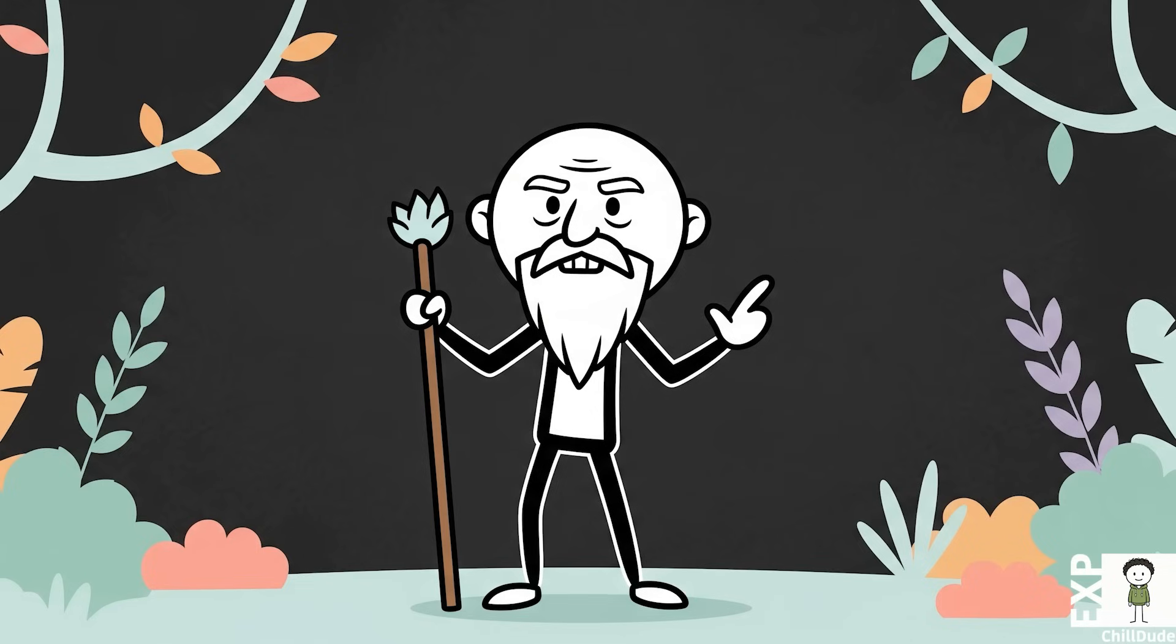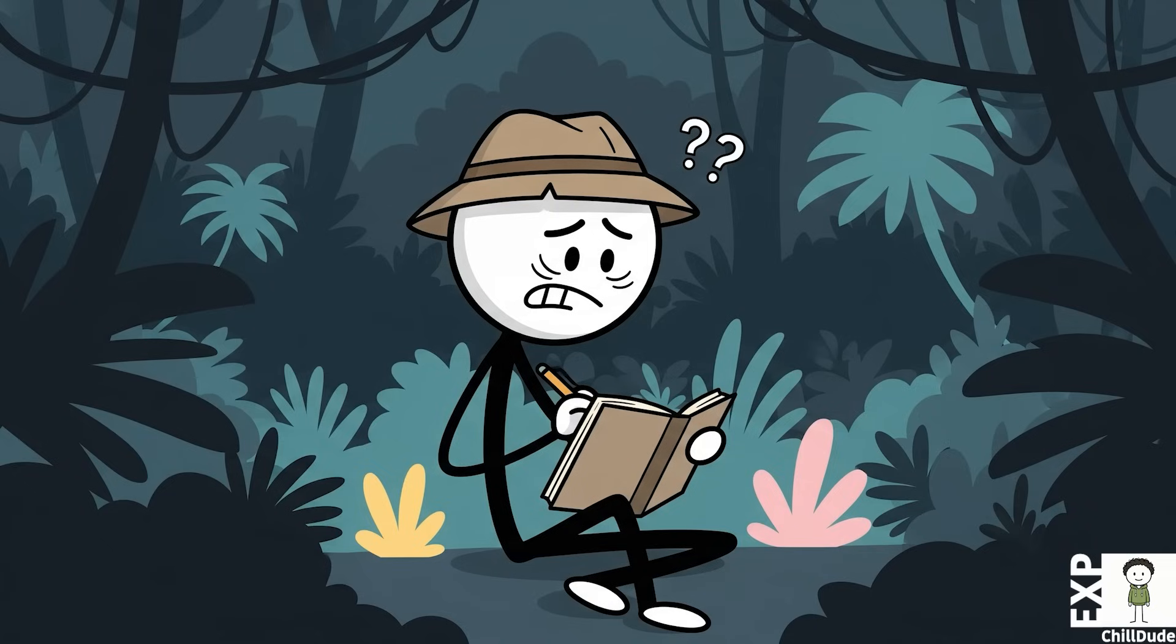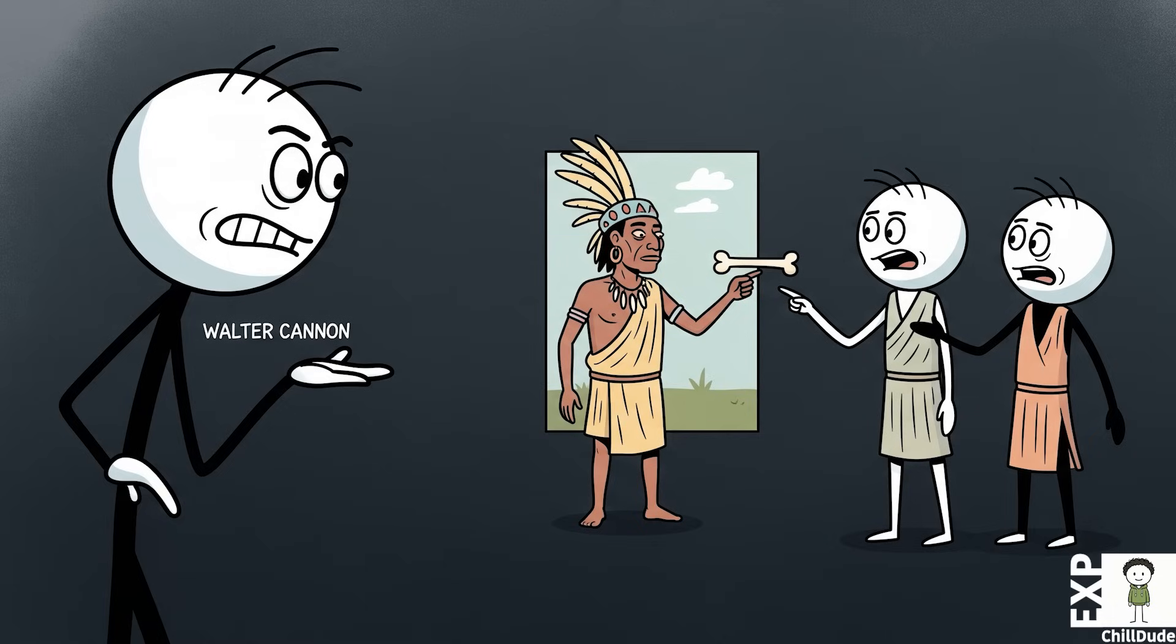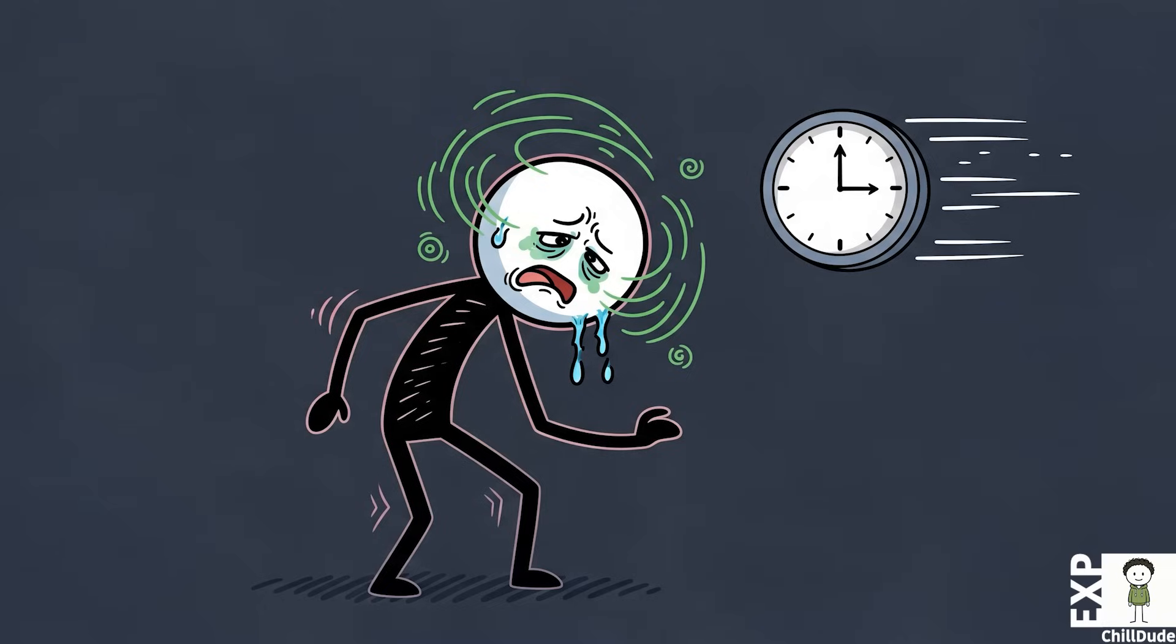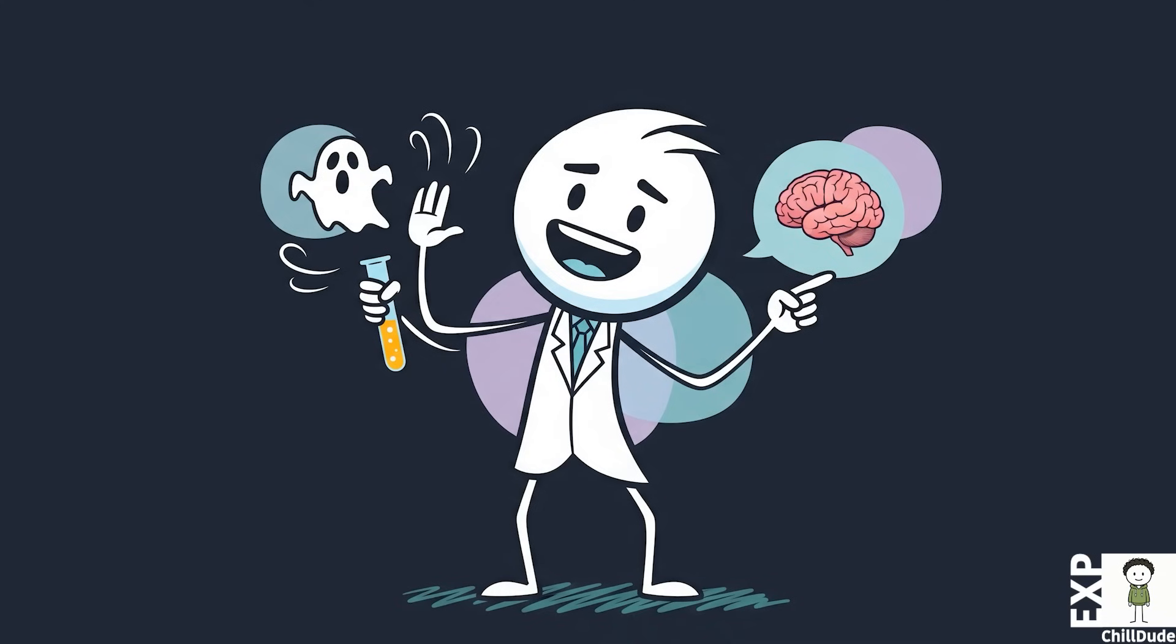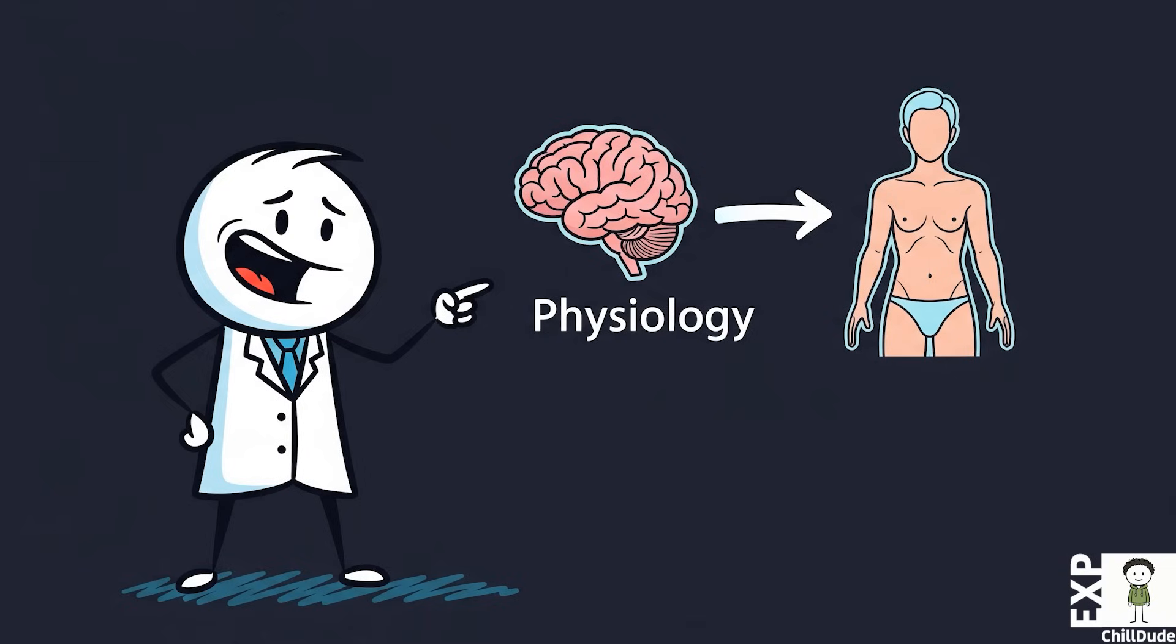The journey to understanding this fatal surrender begins not in a modern laboratory, but in the anthropological field notes of the 1940s. Harvard physiologist Walter Cannon was captivated by accounts of voodoo death, where individuals in certain cultures, believing they had been cursed by a shaman, would inexplicably sicken and die within days. Cannon dismissed supernatural explanations, proposing instead a purely physiological one.